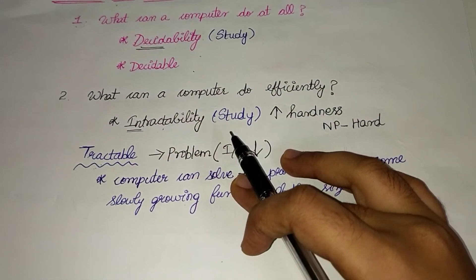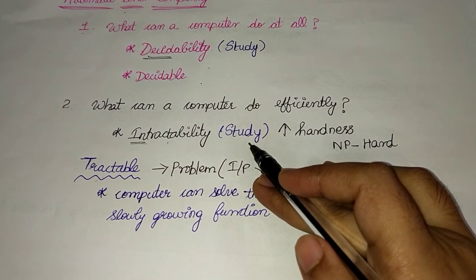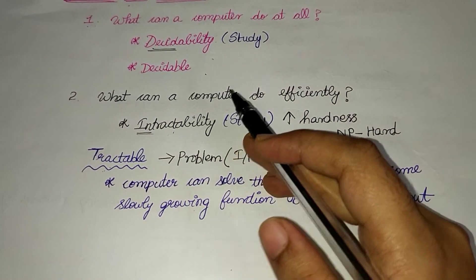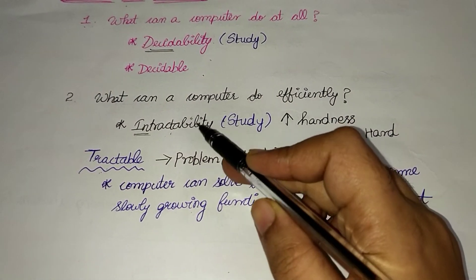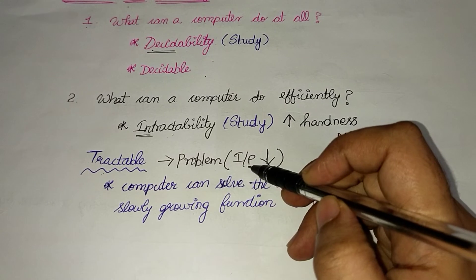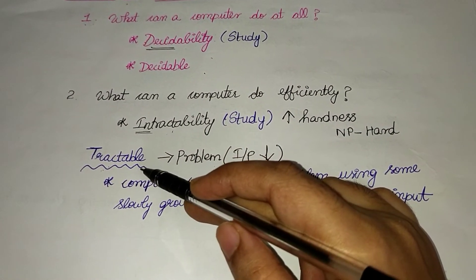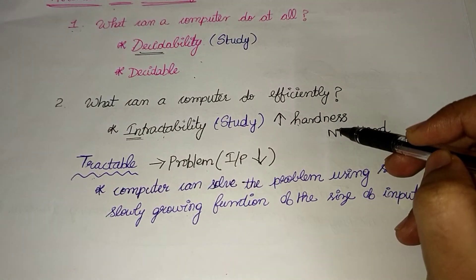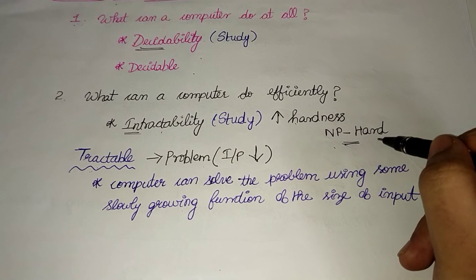Decidability — that's why a computer can work efficiently. Intractability: if you look at the efficiency of a computer, there are two types — tractable and intractable. Tractable means we have a small size problem that is easy to solve. Intractable means we have a complex problem, though it can still be solved.